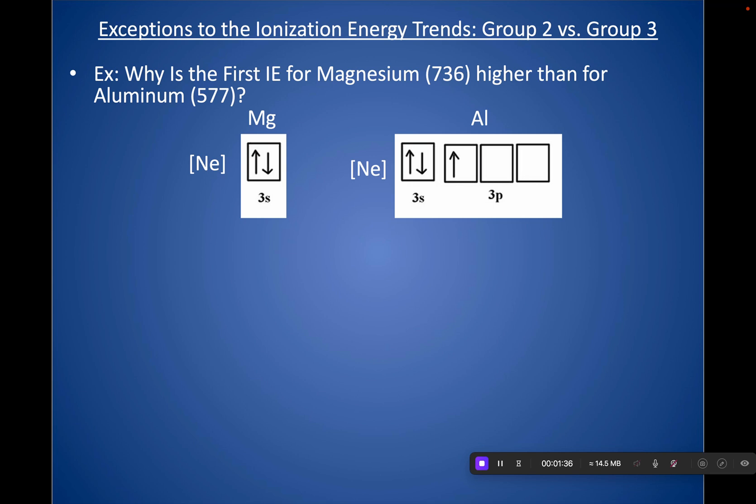Make sure you know this reason: the reason for Group 2 versus 13 is you are pulling from a p subshell versus s, which is easier to remove due to a lower penetration effect. If you had to say, you could use the distance argument—that p is further from the nucleus—but in actuality it's that it doesn't penetrate the nucleus as well.